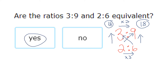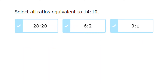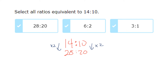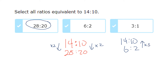Whichever way you recognize a pattern, that confirms equivalence. Now: which of the following are equivalent to 14 to 10? For 28 to 20 — multiplying 14 by 2 gives 28 and 10 by 2 gives 20, so this one is equivalent. For 6 to 2 — 2 times 5 is 10 but 6 times 5 is not 14, so these two ratios are not equivalent.